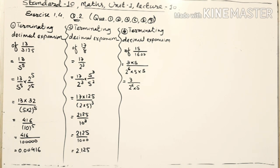Next, to get the terminating decimal expansion of 15 upon 1600, I have factorized both numerator and denominator. The factorization of the numerator gives 3 into 5, and the denominator gives 2 raised to 6 into 5 into 5. Since 5 is a common factor in numerator and denominator, I have cancelled it, and the remainder is 3 upon 2 raised to 6 into 5.